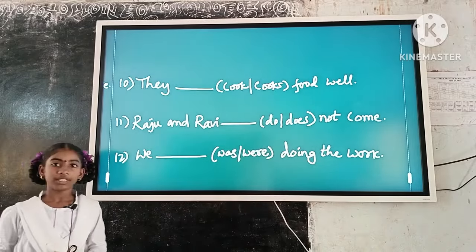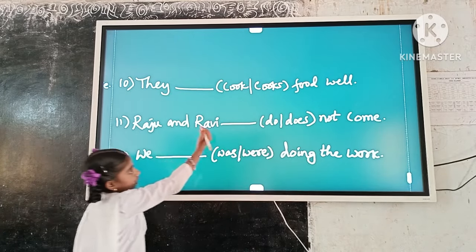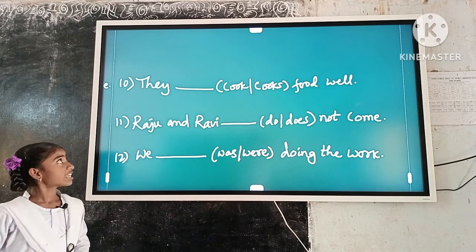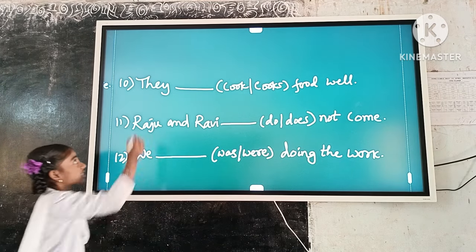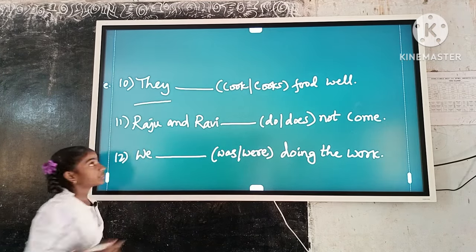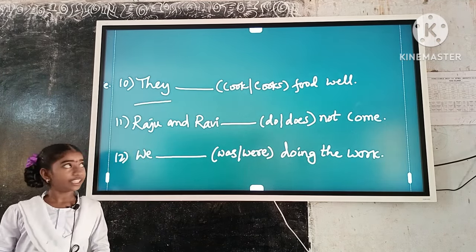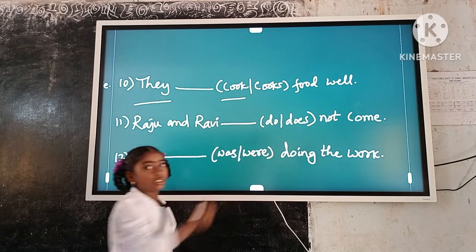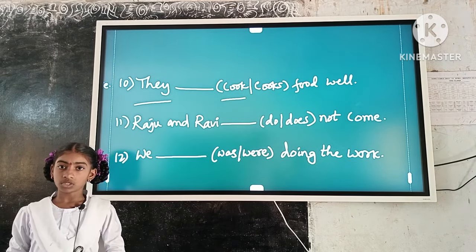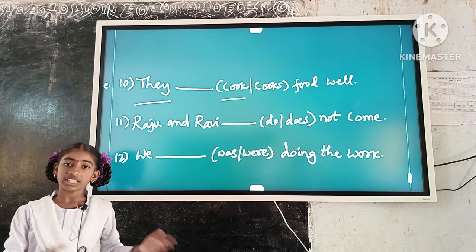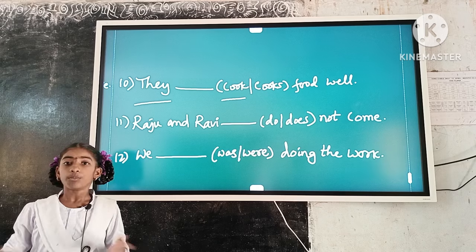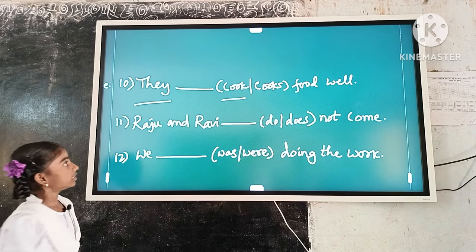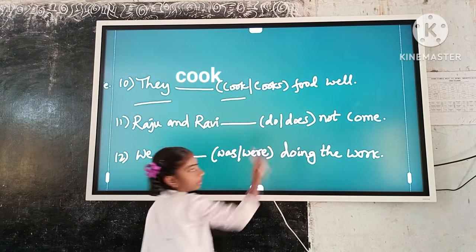Example number 10: They dash cooked well. Here, the subject is plural. 'Cook' is a plural verb form. So, plural subject and plural verb form agree. The answer is: They cook well.